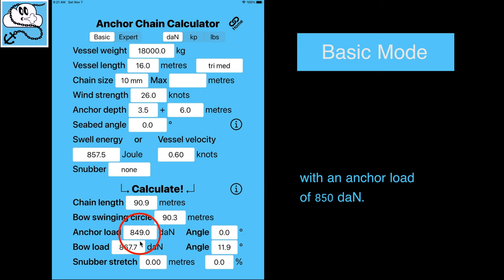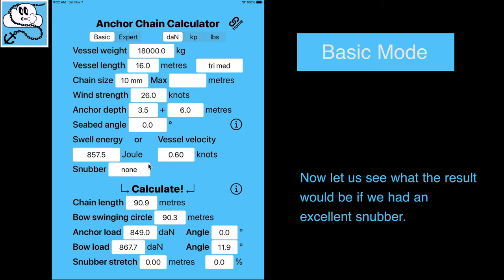with an anchor load of 850 dN. Now let us see what the result would be if we had an excellent snubber.